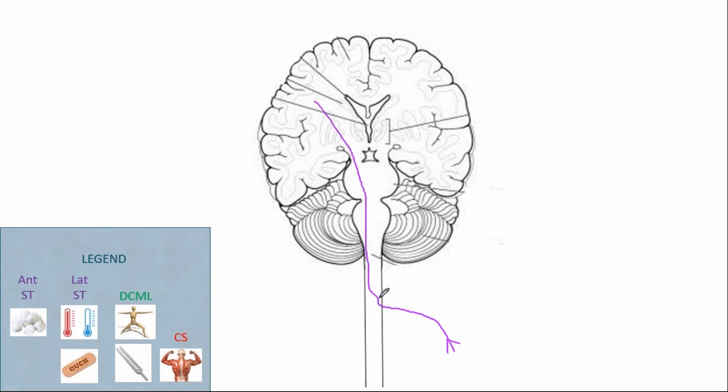So again, spinothalamic tract information is coming in, coming into that spinal cord, traveling up one or two segments, crossing over within that spinal cord, and then ascending up to have information processed in the contralateral side of the brain.